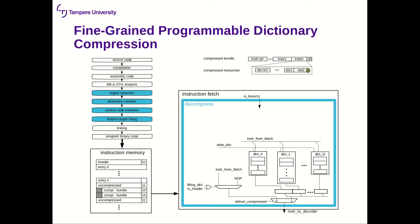This is how the instruction fetch hardware looks. We have a number of dictionaries in parallel, and for each of them we can configure their number of entries and the width. During execution, we can either fetch uncompressed or compressed instructions.